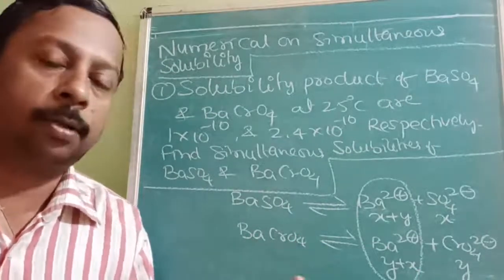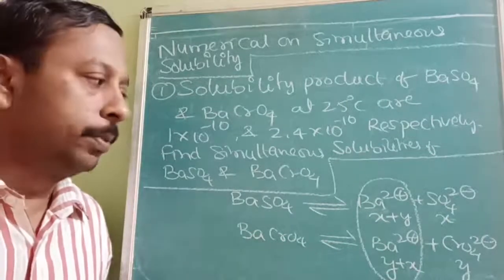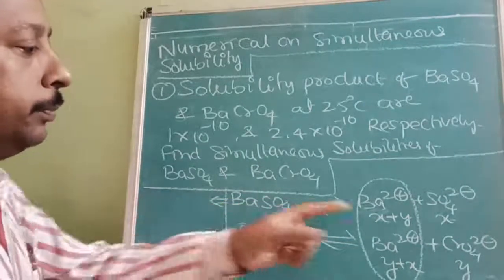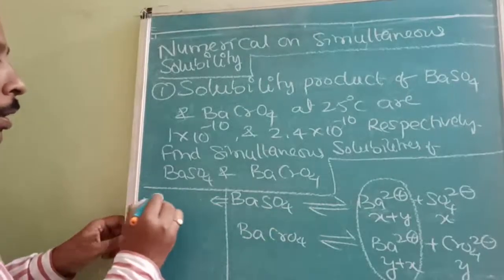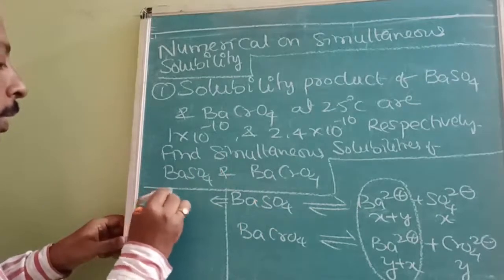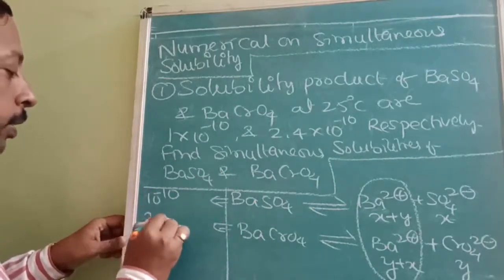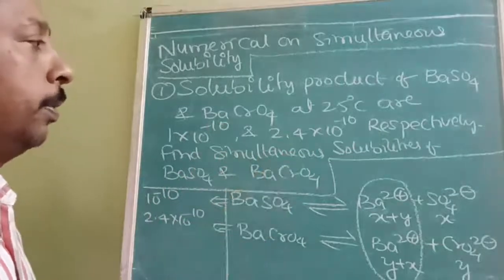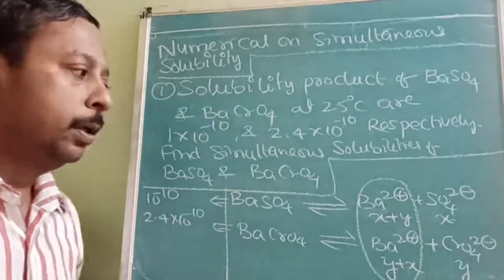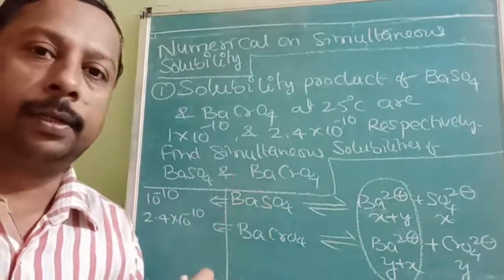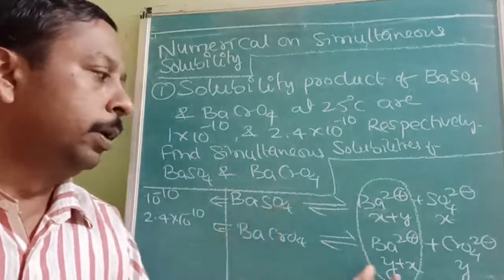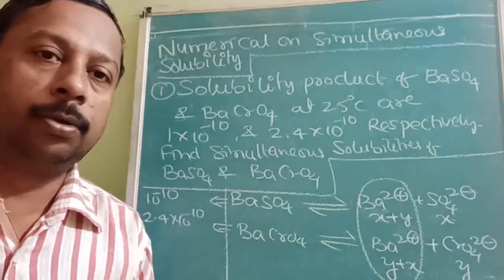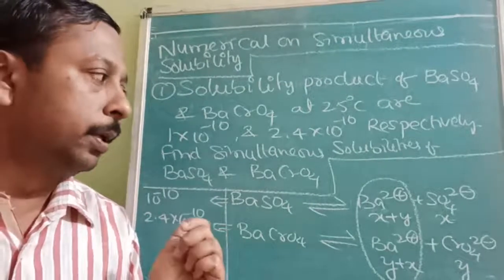The difference between simultaneous and simple solubility is that in simple solubility the Y contribution to Ba²⁺ is absent. KSP of BaSO4 = 10⁻¹⁰, and KSP of BaCrO4 = 2.4 × 10⁻¹⁰. We need to find X (solubility of BaSO4) and Y (solubility of BaCrO4). Pause the video and give it a try if you can.